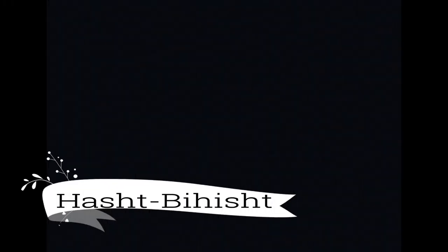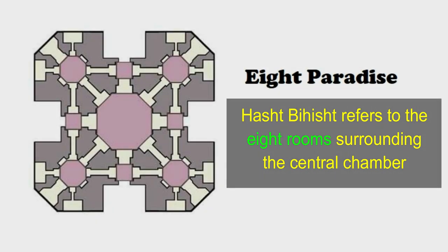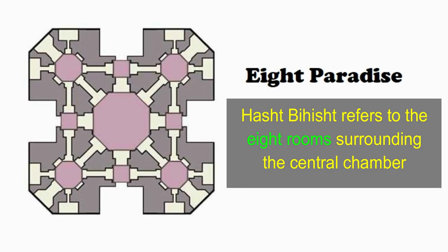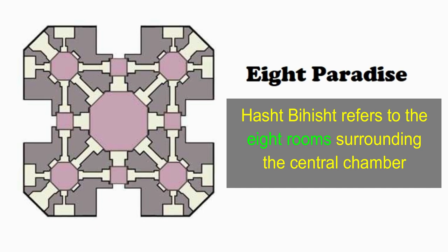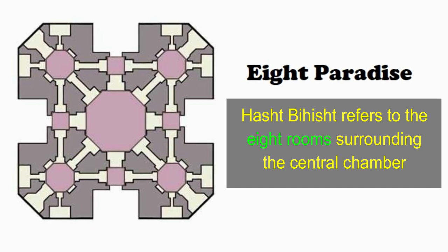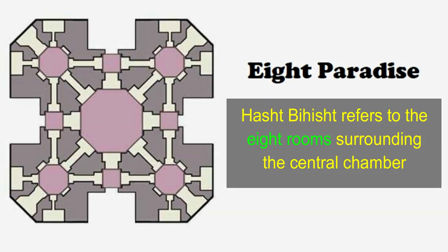Coming to another feature — Hasht Behisht. Simply speaking, Hasht Behisht refers to the eight rooms surrounding the central chamber, as you can see in this layout.